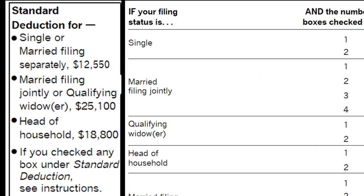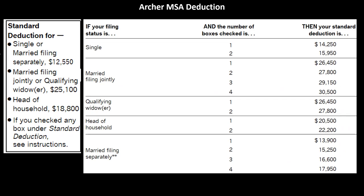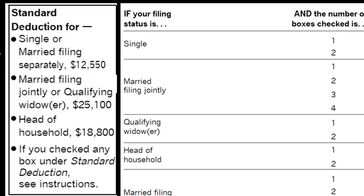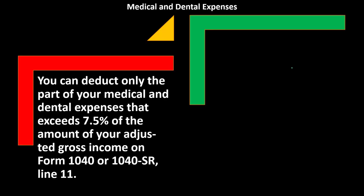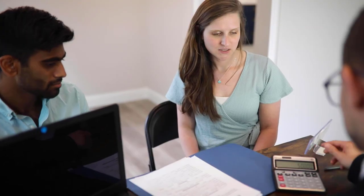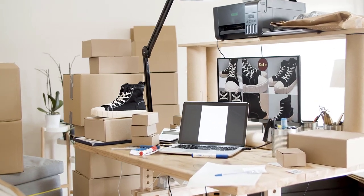Remember, when thinking about the standard deduction versus itemized deductions, keep the standard deduction in mind. For single filers, it's $12,550; double that for married; head of household is in the middle at $18,800. If they're over a certain age and/or blind, there are additional variations. You've got to keep those in mind when advising people whether to gather medical and dental receipts. If you've got a shoebox full of stuff, do you need to add up the medical and dental? Well, it depends on whether or not it's going to be beneficial to do so.